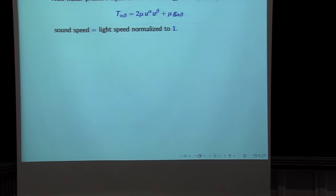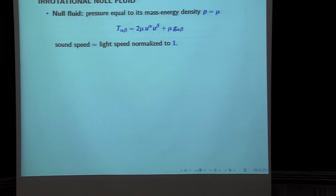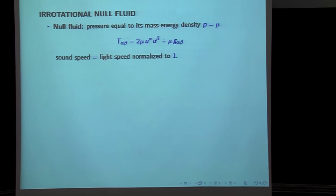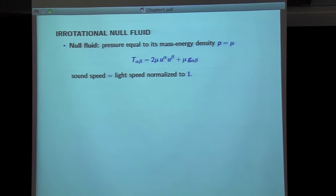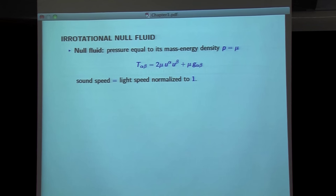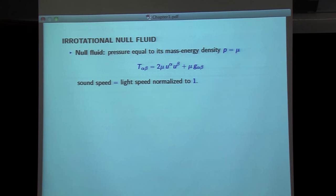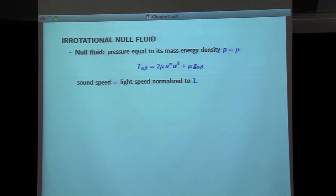I now want to explain how to go from irrotational null perfect fluids to the scalar field. There are a couple of pages of computation. We start with the formula for T_αβ, assuming that the pressure equals μ (the null fluid condition, so the sound speed equals the speed of light), and we express the Euler equations — the twice-contracted Bianchi identities — and introduce the assumption that the fluid is irrotational: U_α = ∇_α ψ / |∇ψ|.